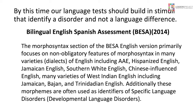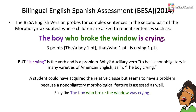The second part of the BESA morphosyntactic section has students repeat sentences, with some assessment of dependent clauses and subordinate clauses, but how they're scored is a problem. For example: 'The boy who broke the window is crying.' The student gets a point for 'the boy' or 'a boy,' and a point for 'that' or 'who' introducing the relative clause. But 'is crying' — the auxiliary BE form — is contractable: 'The boy's crying.' Therefore it's non-obligatory in many varieties of English.